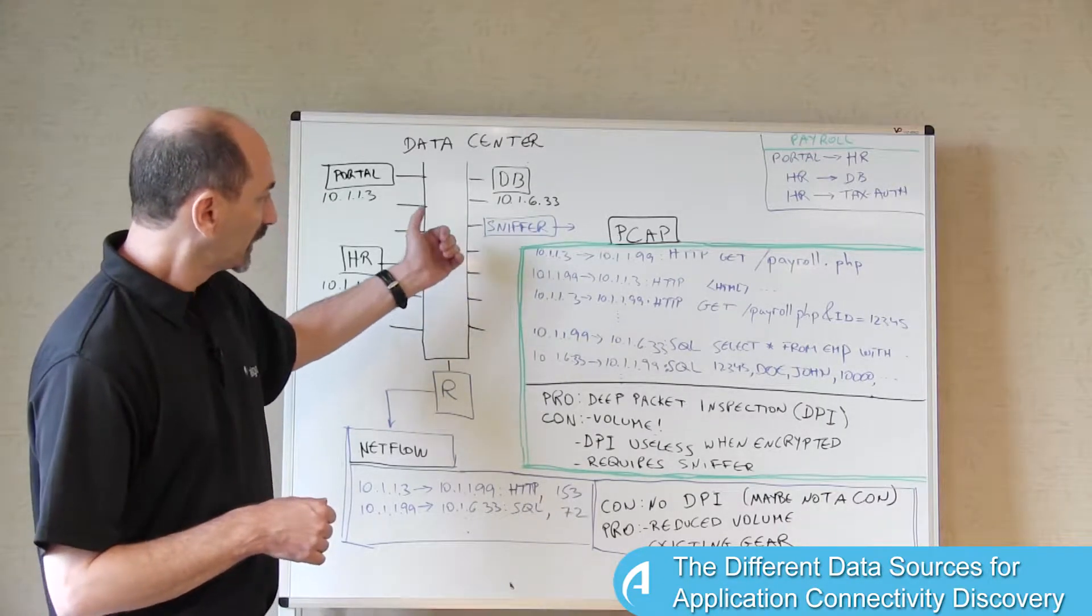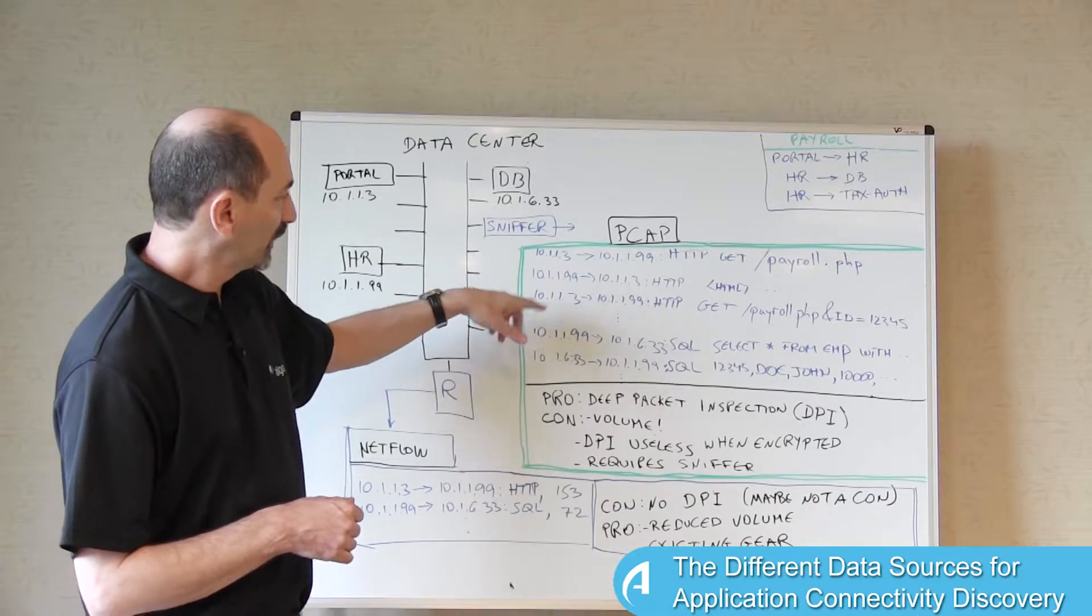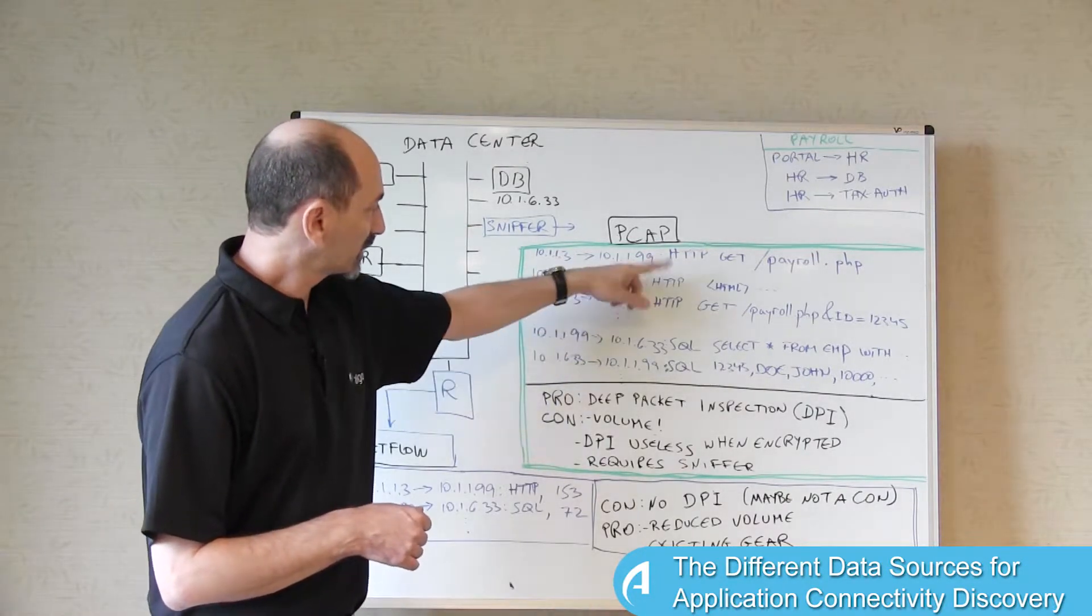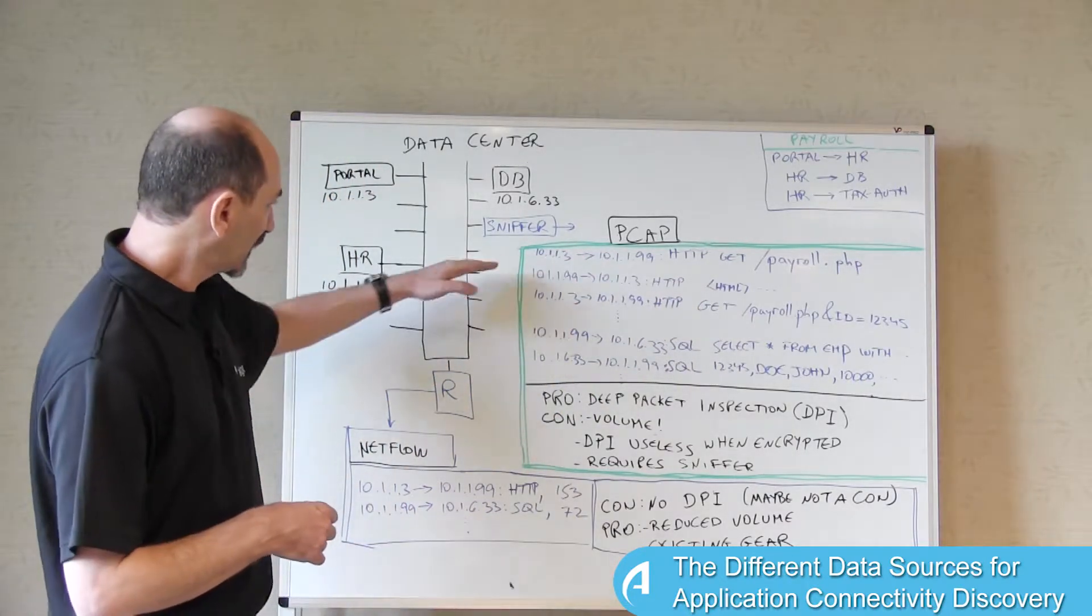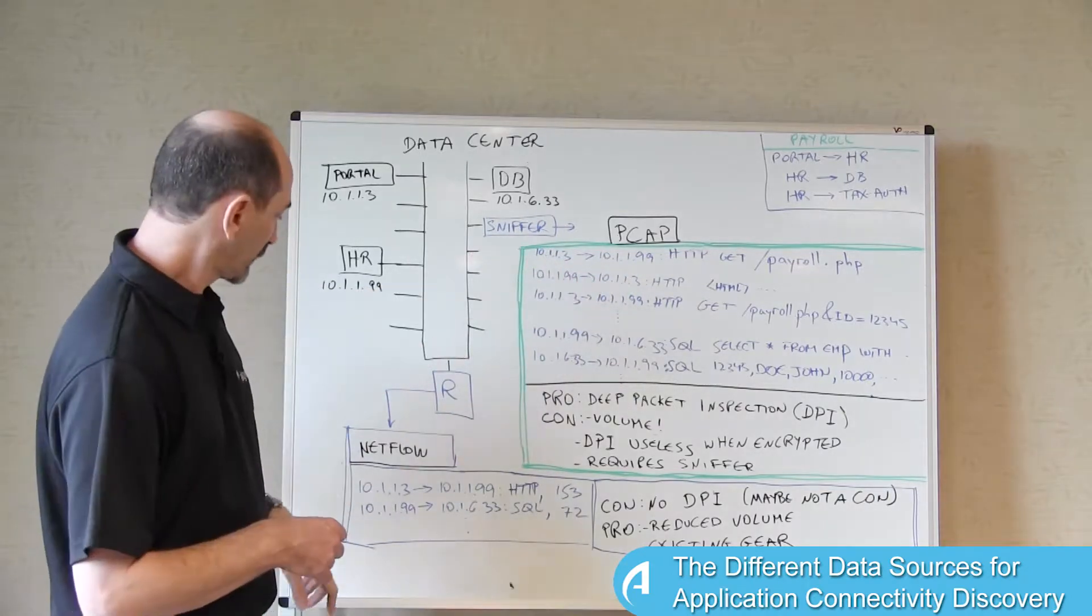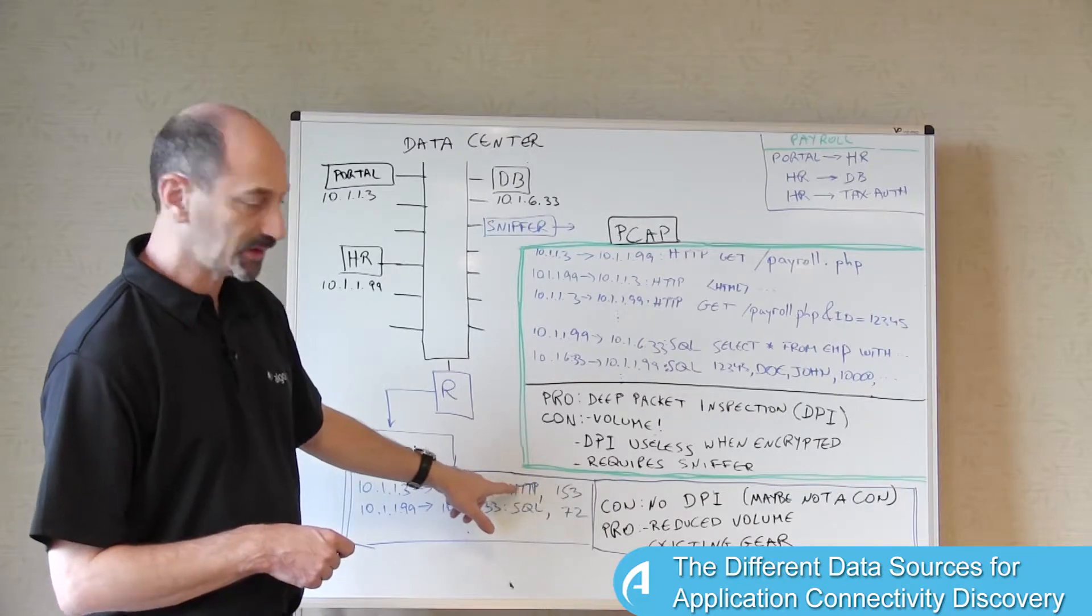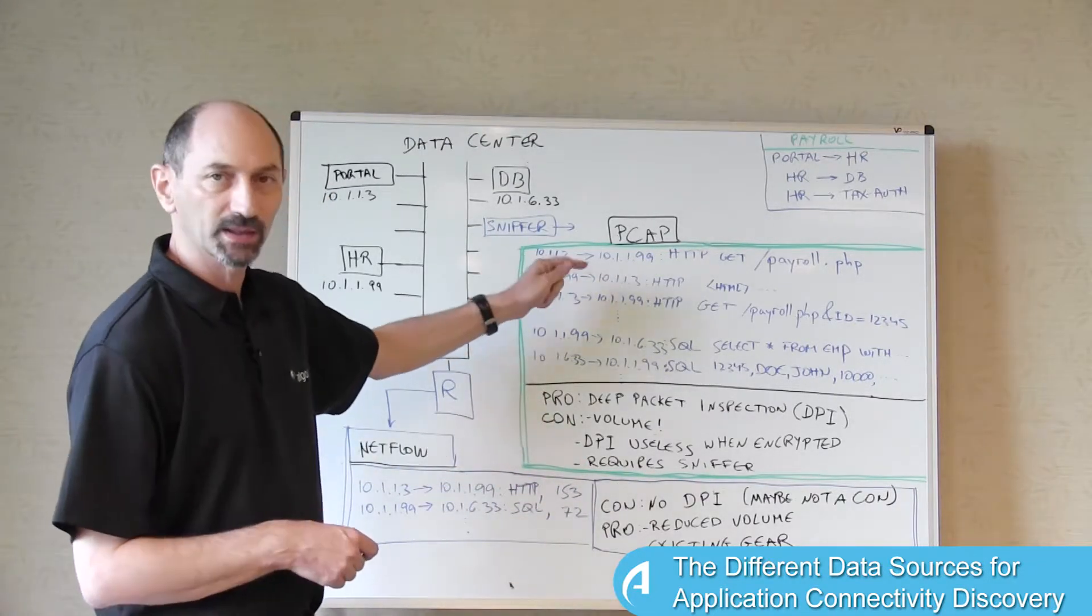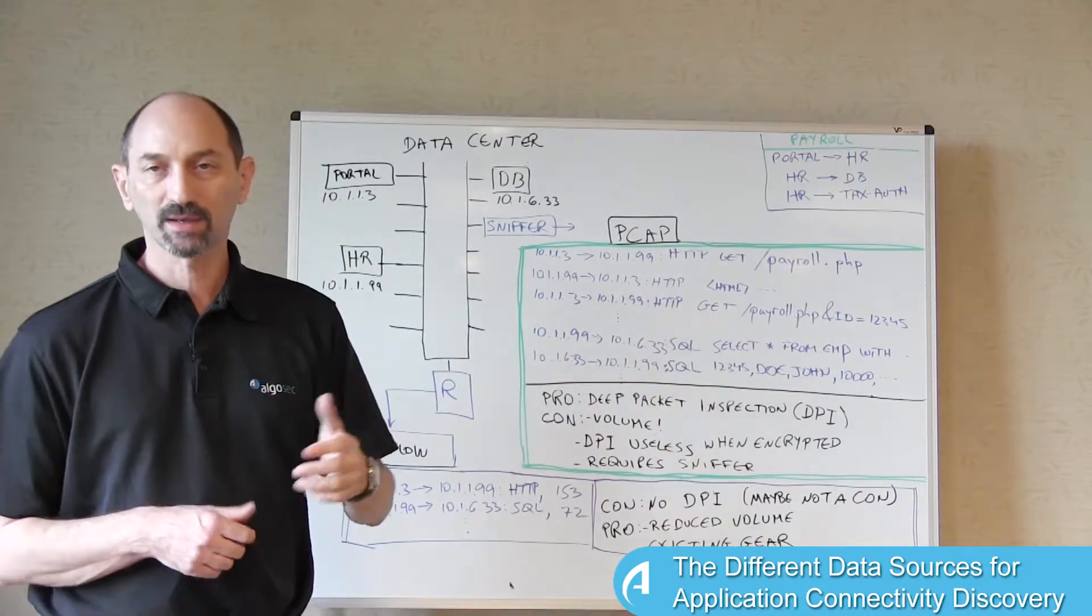In this example, these three packets over here have the same source and destination, maybe switched, and the same protocol. So they're all in the same TCP connection. NetFlow would emit a single record for all of them together, saying there is a connection from this IP to that IP using HTTP, and it would suggest a counter counting how many packets were included in the flow and maybe some timestamps.